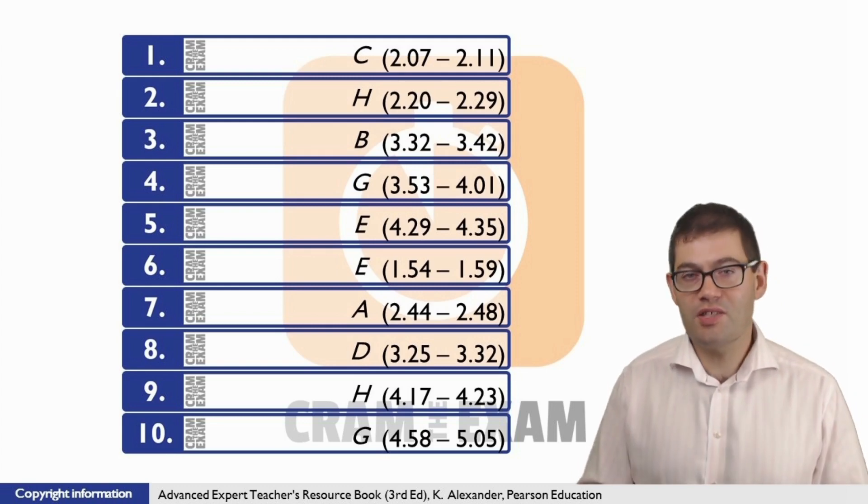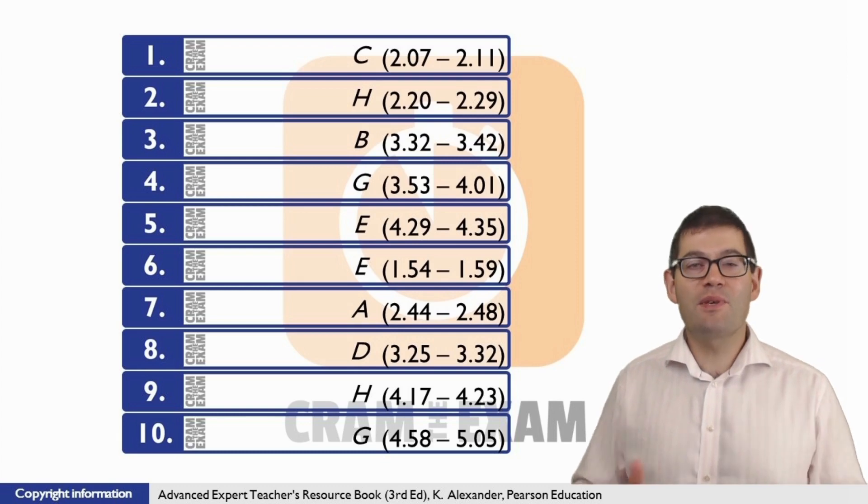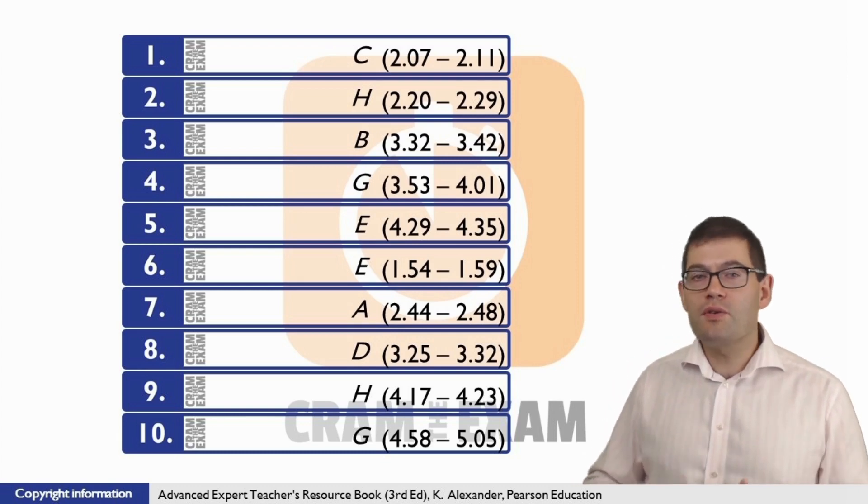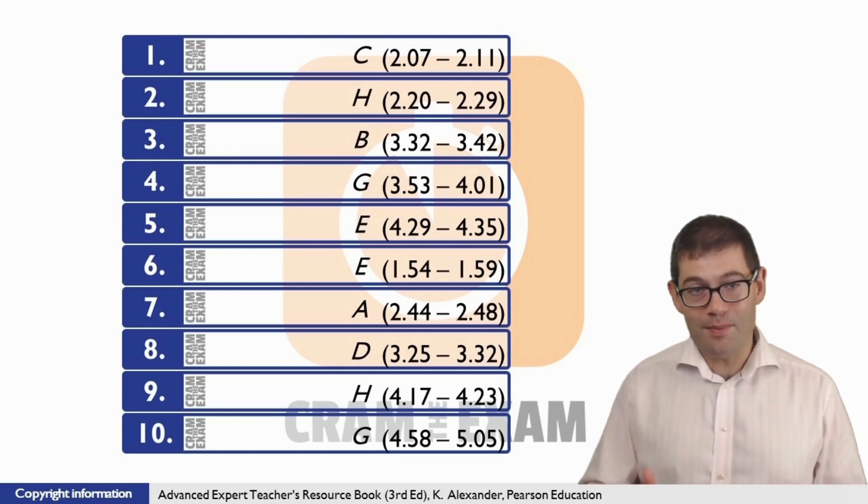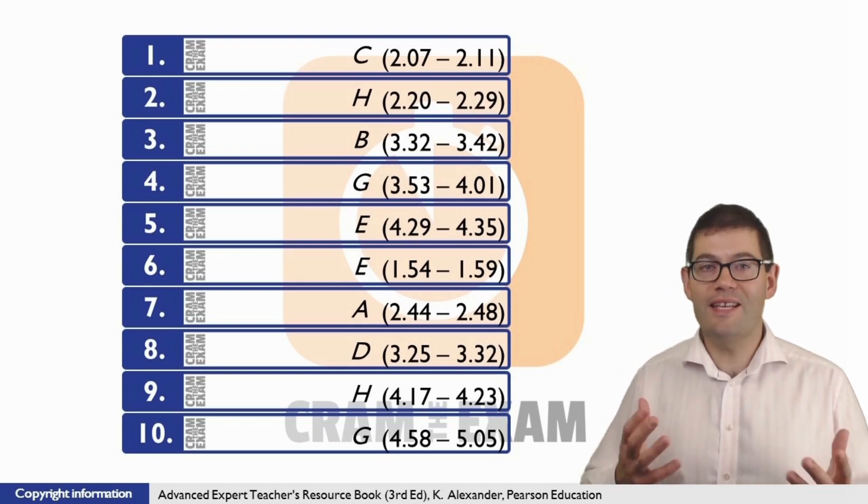For question four, the answer is G, I was attracted by his looks. And that's because speaker four says, I saw those clear blue eyes and oh, I was done for. Which basically means, idiomatically, that the speaker fell in love.